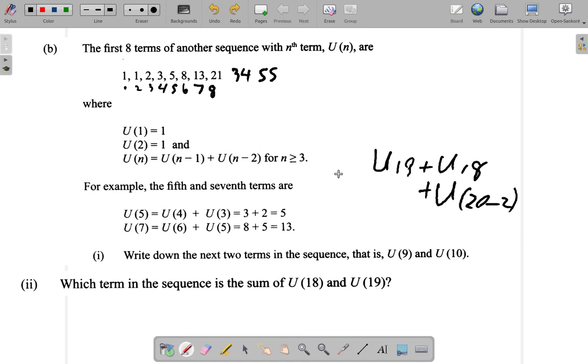Then, U(n minus 1). U(n minus 1) should give you U(19).